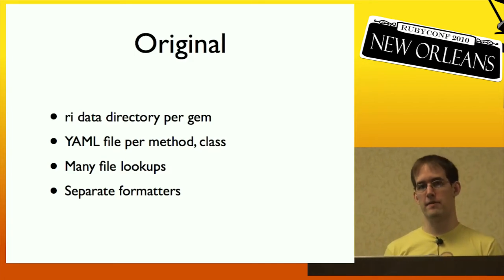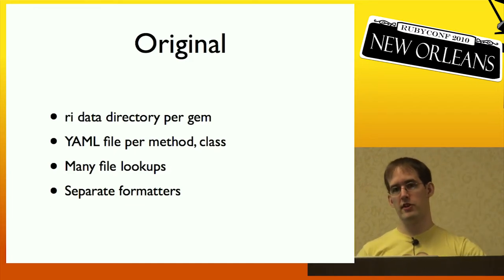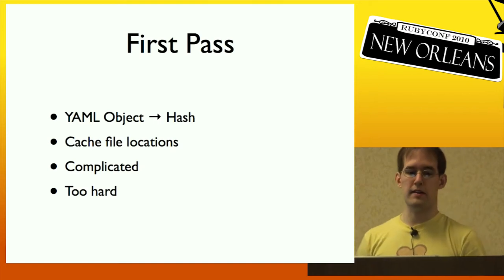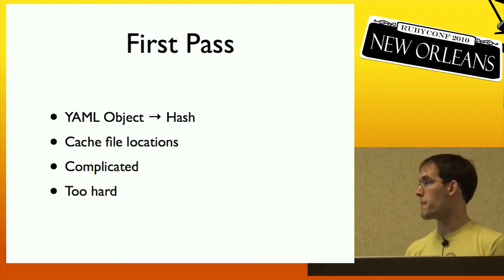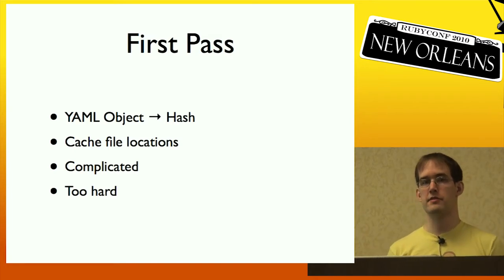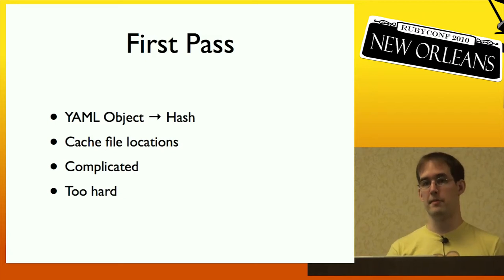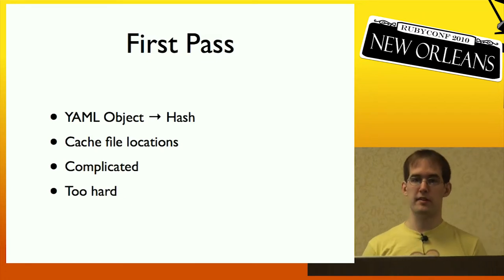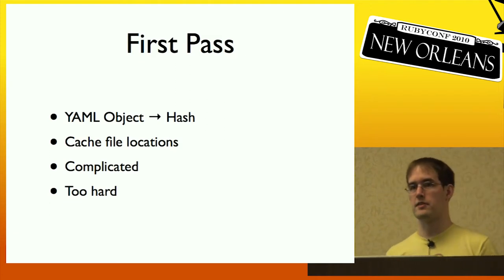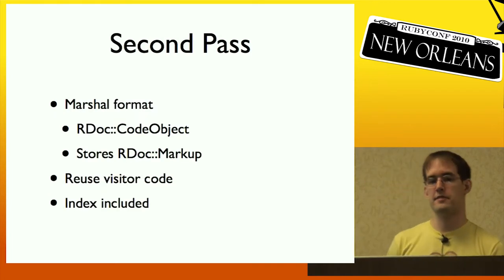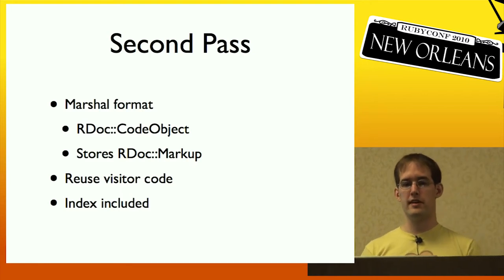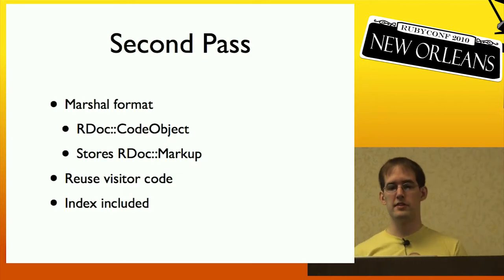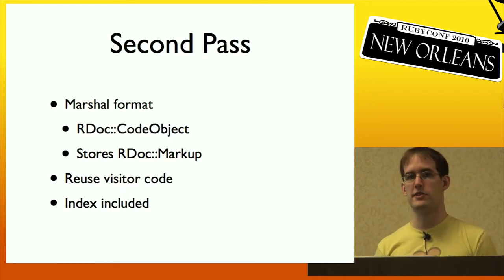There was also a separate formatter for output — the HTML generators and RI didn't share any code. For the first pass improving RI, largely done by Ryan Davis, the YAML objects were replaced with hashes, so RI would load a nested hash instead of a YAML object. A cache of file locations was added, but given the nature of the original RI code, this was too difficult. For the second pass, the Marshall format was added: we store the RDoc code objects directly, along with the RDoc markup tree from the parsed comment, and reuse the visitor code. There's also an index per directory to speed lookups, though there isn't a complete cache across all gems like the original format.